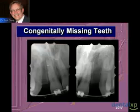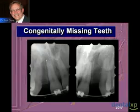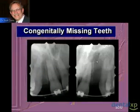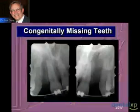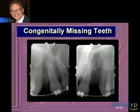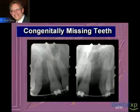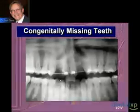We would rather have the roots be divergent and not convergent so that we have enough room to place our implant. On the patient's left side we have a minimal amount of room, although there is certainly a much more favorable type of root proximity than on the patient's right side.